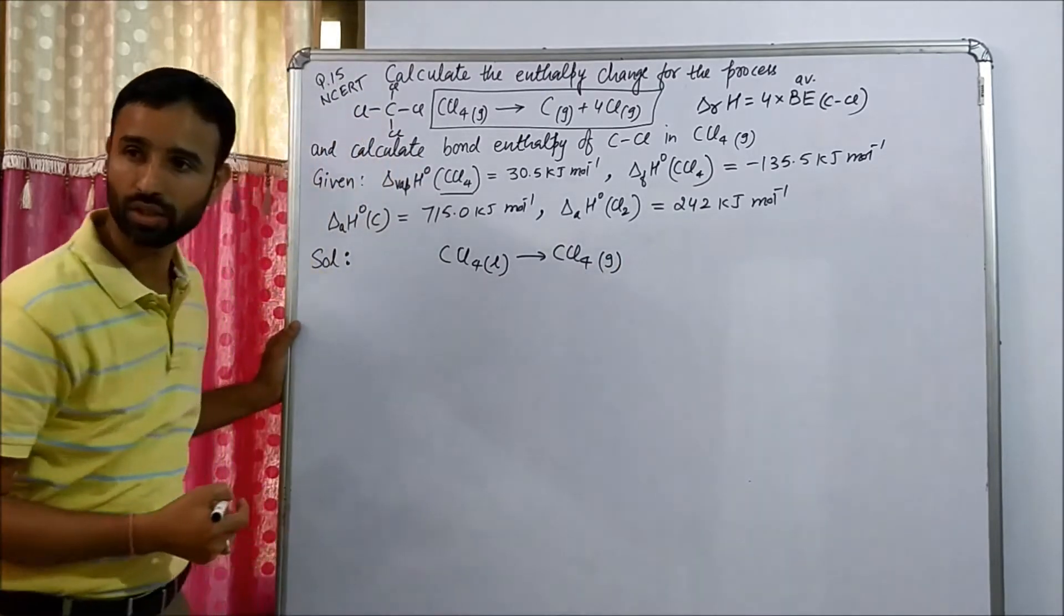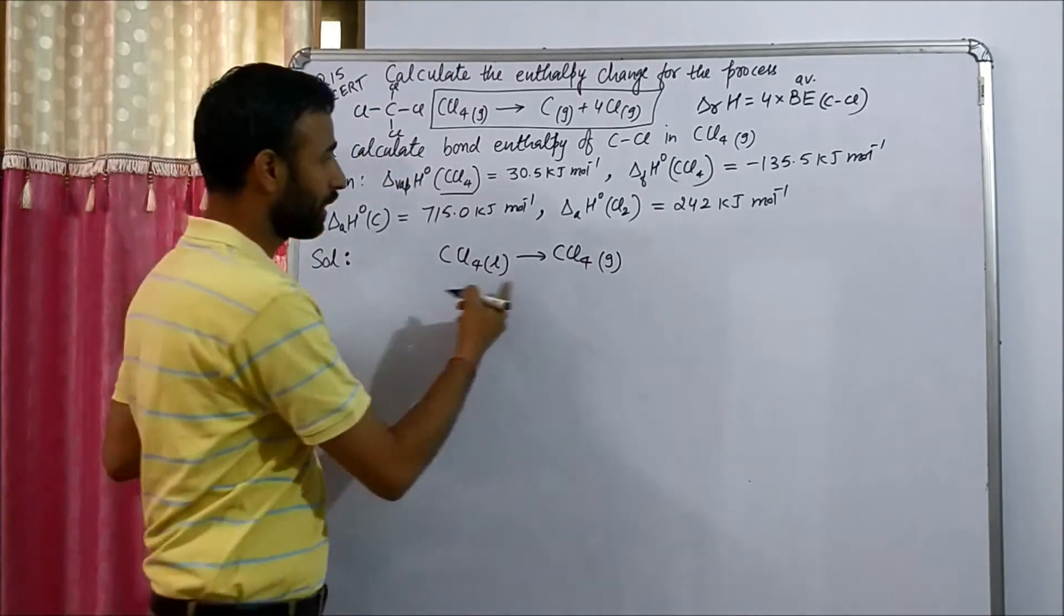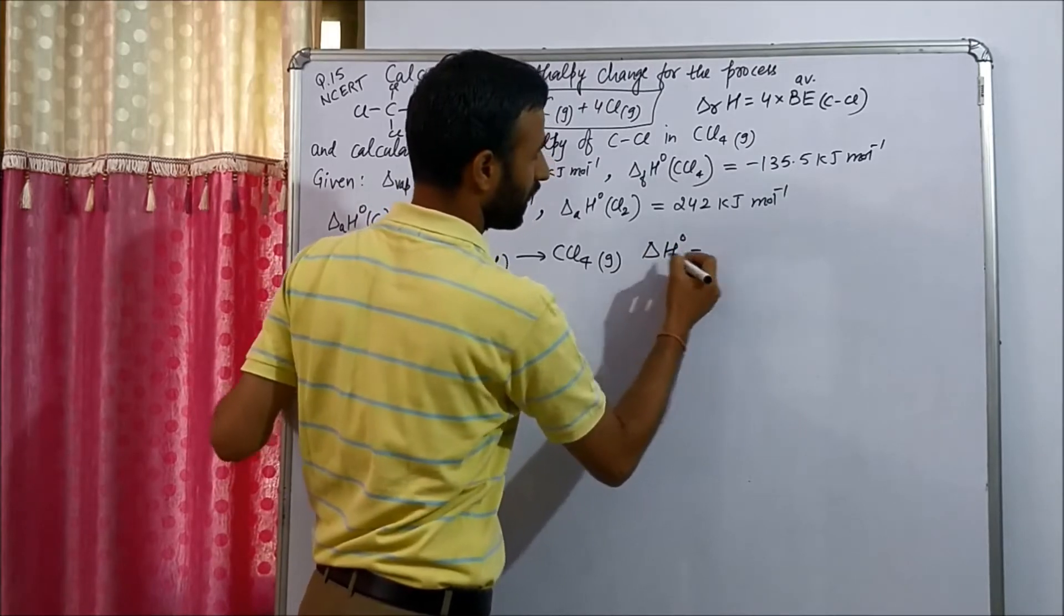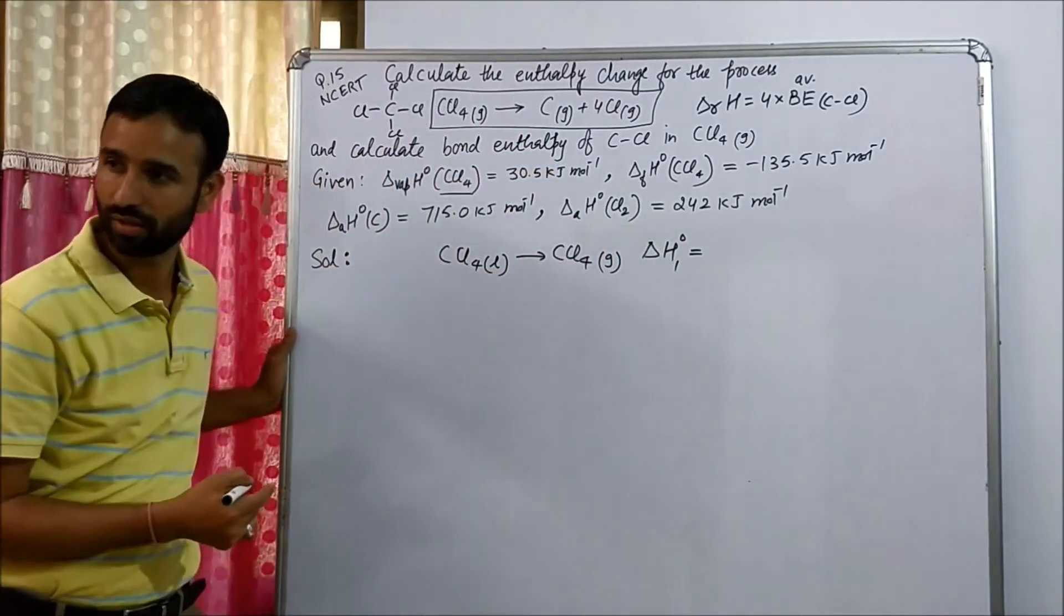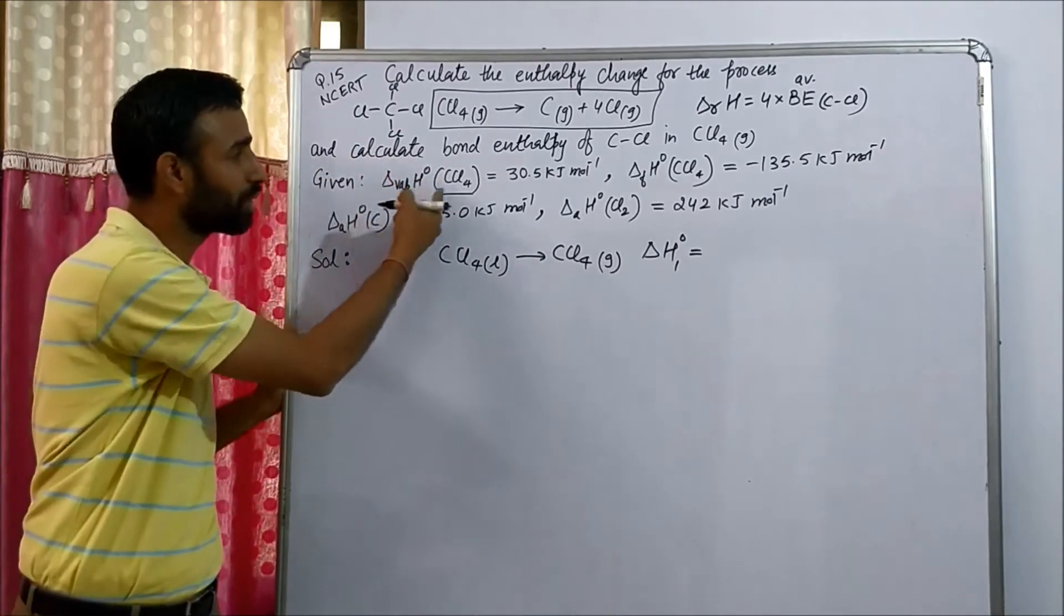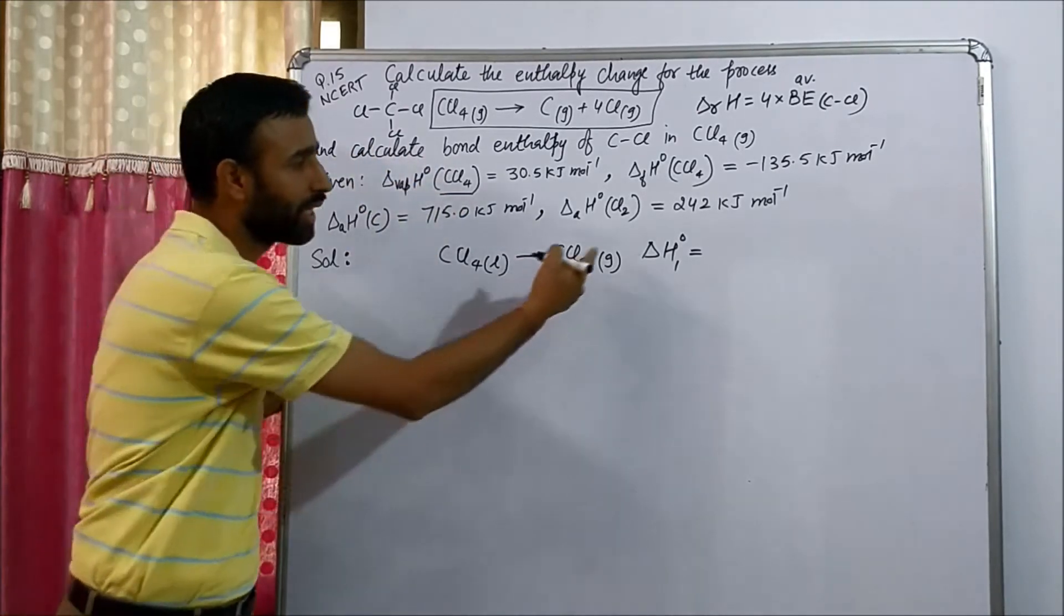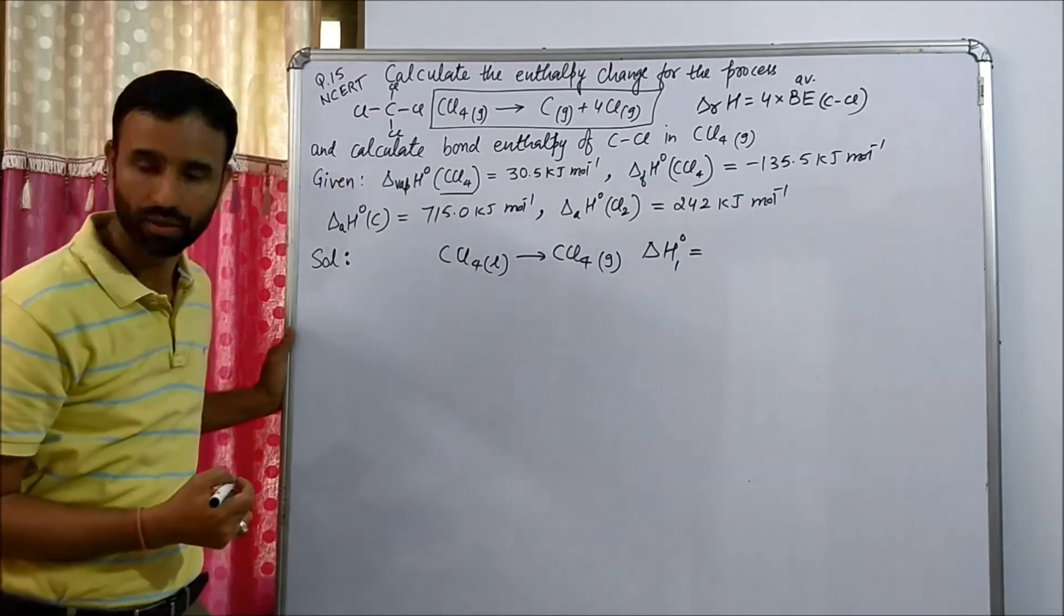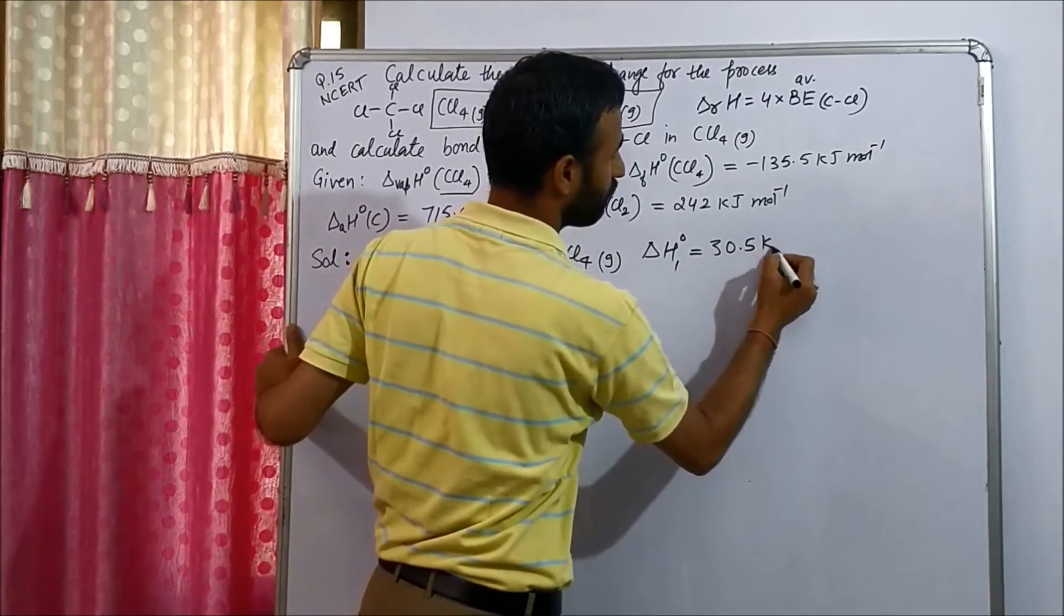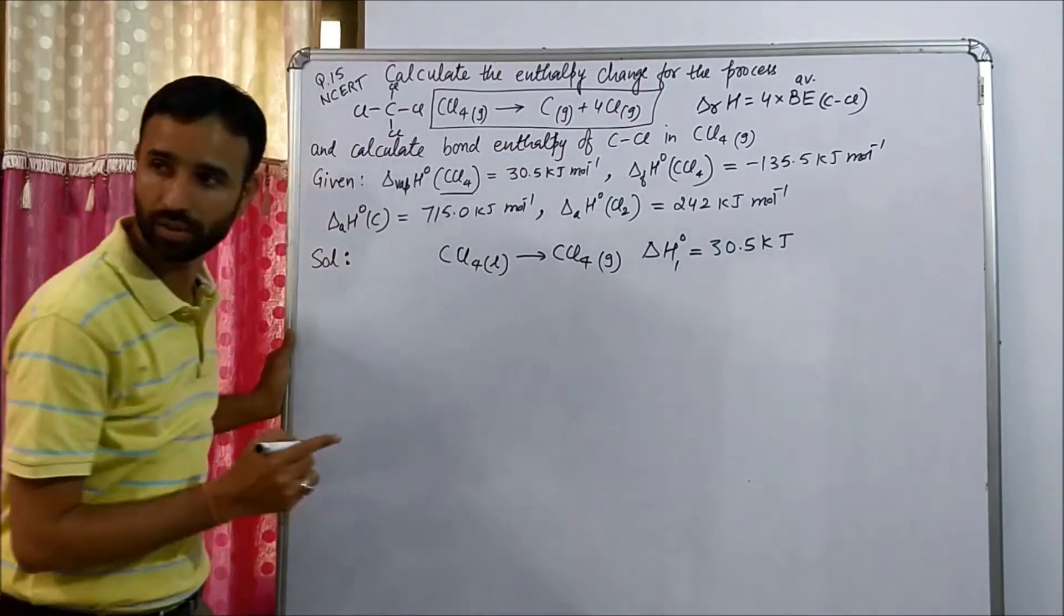This is the reaction for vaporization and energy is taken as delta H1 naught, actually it is enthalpy of vaporization, standard enthalpy of vaporization of CCl4. We take it as delta H1 naught, that is 30.5 kilojoules.